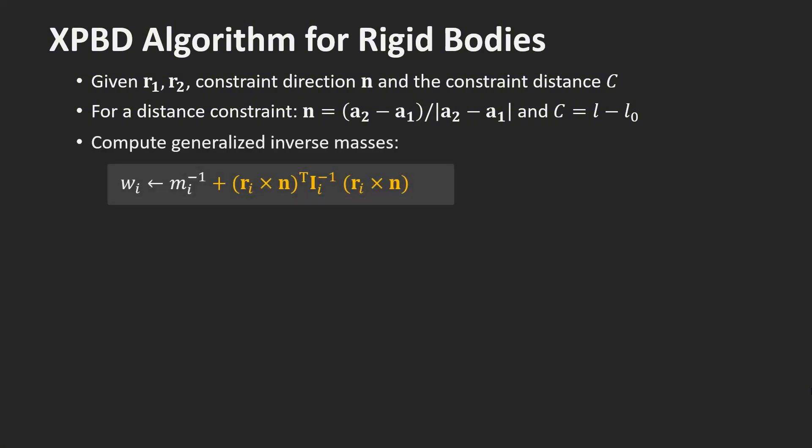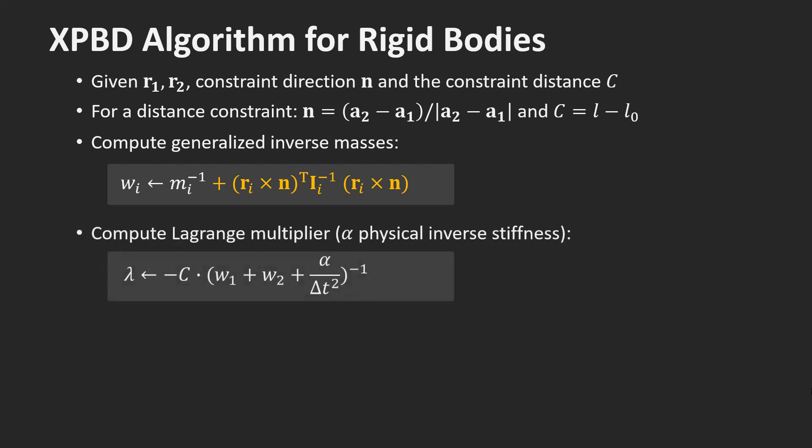First, we compute a generalized inverse mass Wi for each body. Now we compute the scalar value lambda, which is called the Lagrange multiplier of the constraint. Here, alpha is compliance, which is the inverse of physical stiffness. Having lambda, we can now update the positions and orientations of the two bodies.